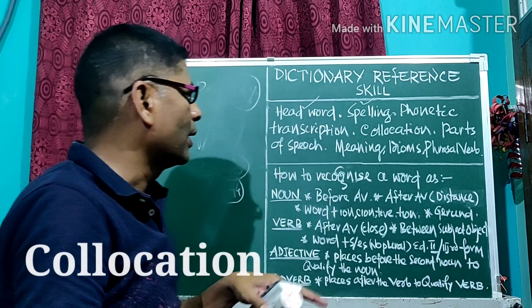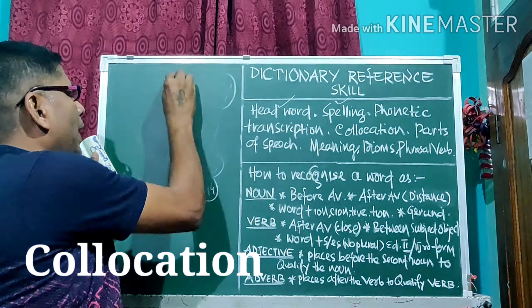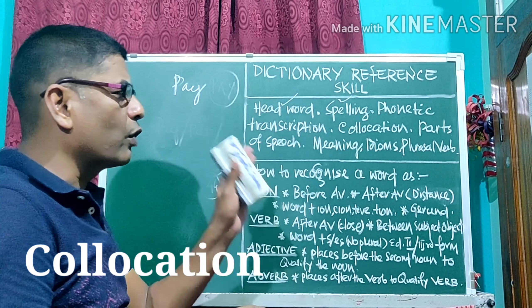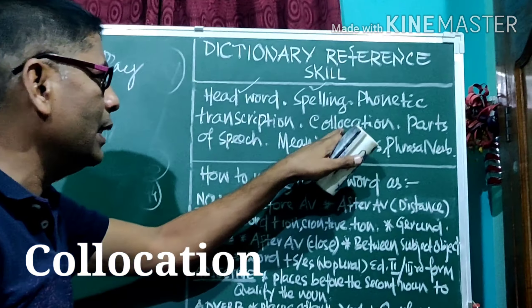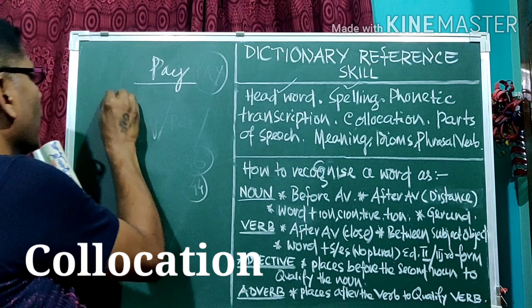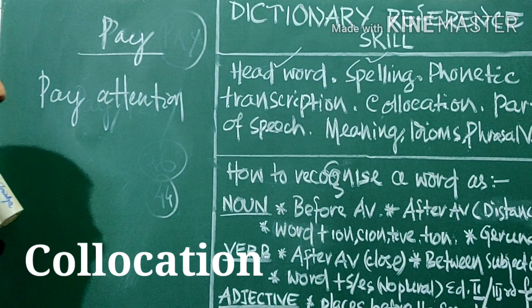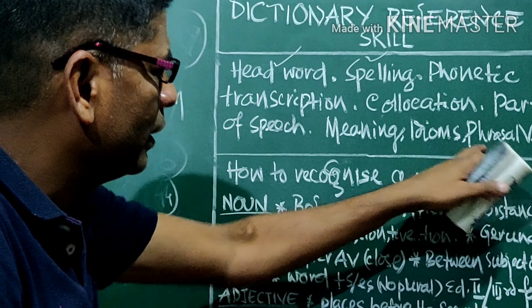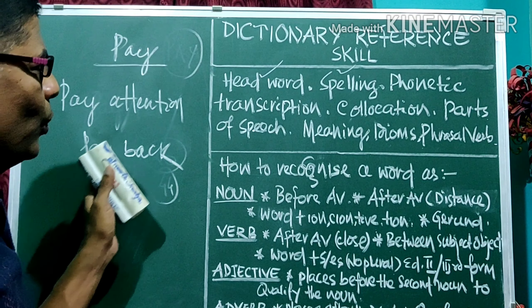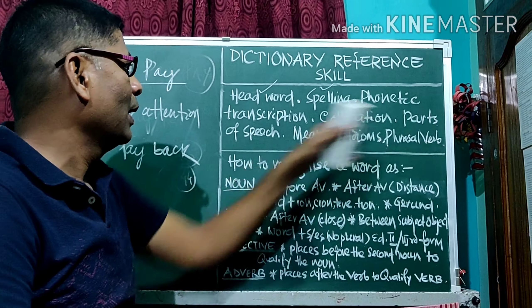And collocation — collocation means, taking the head word 'pay', we can make phrases, idioms, or phrasal verbs; that is called collocation. For example, the idiom 'pay attention' and the phrasal verb 'payback'. So we can get collocation from the dictionary.